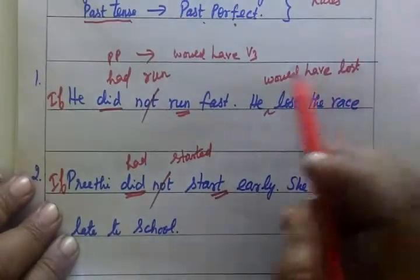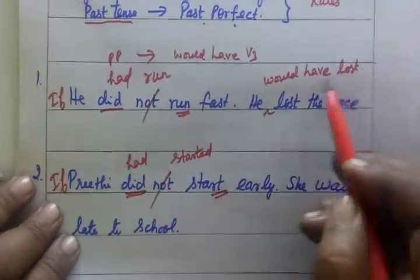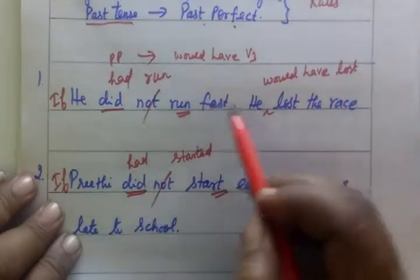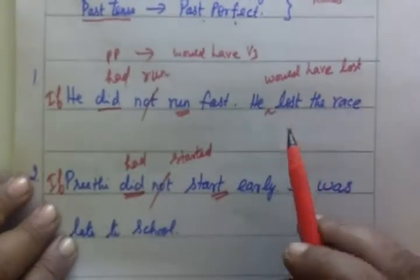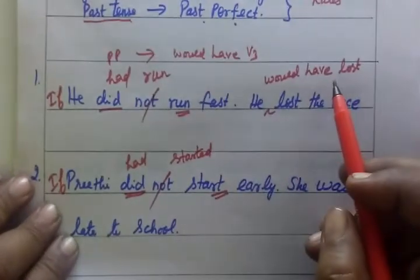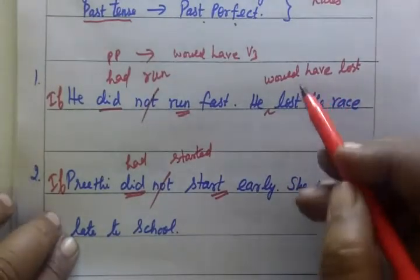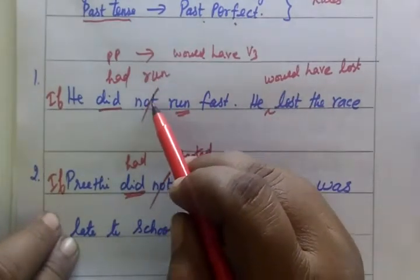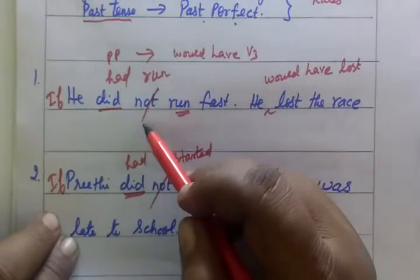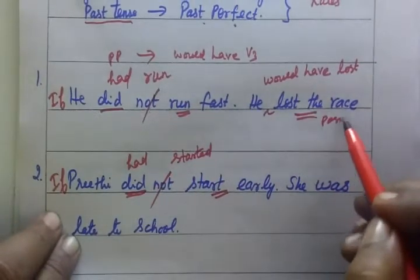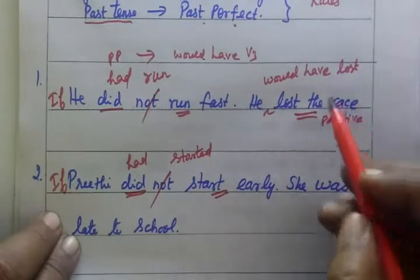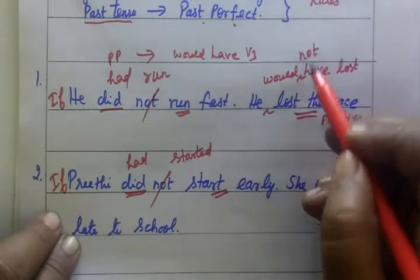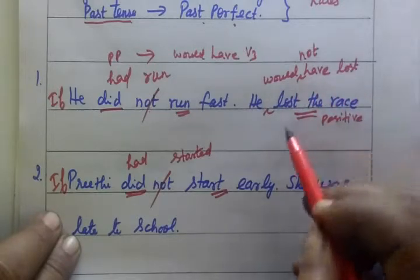He would have lost the race. But the race is lost — that is not meaningful. So we write it in positive-negative form: he would not have lost the race.